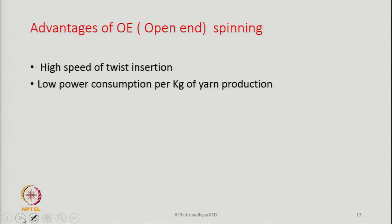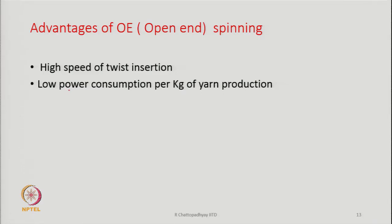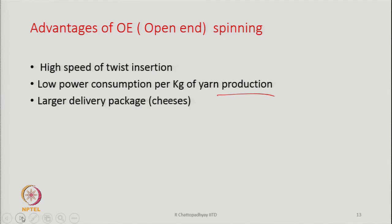As a result of this, what are the benefits? One is high speed of twist insertion. The twist insertion unit — the twister — can be rotated at a high speed. We can have a small twister, not like a big spindle, not so heavy. We can have a very small unit which can rotate at a very high speed and consume much less energy. The other advantage is low power consumption per kg of yarn production, because we are not rotating a heavy twisting unit — the twisting unit can be made very small now. And therefore a lot of saving of power, meaning power consumption will be much less.